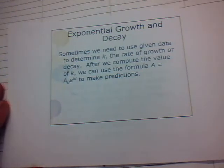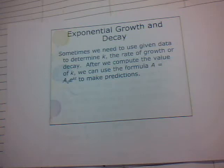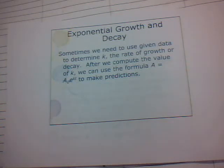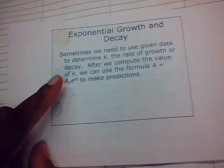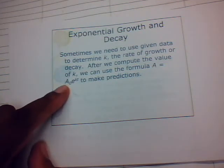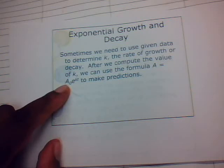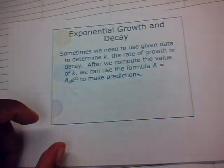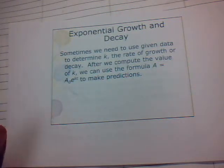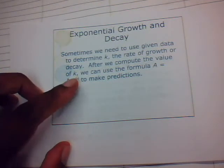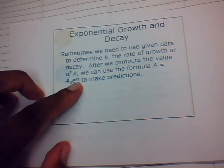Sometimes we need to use given data to determine what k is, which is called the rate of growth or decay. After we compute the value of k, we can use the formula a is equal to a sub 0 times e to the k times t. Here, a sub 0 is the initial amount at a certain time, k is the rate of growth or decay and can be positive or negative, and t is the time.